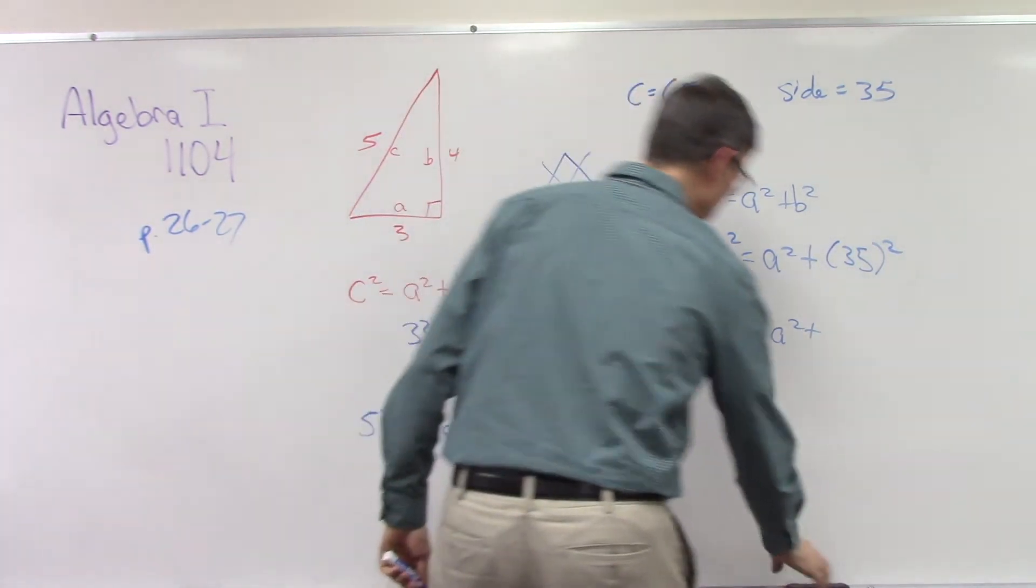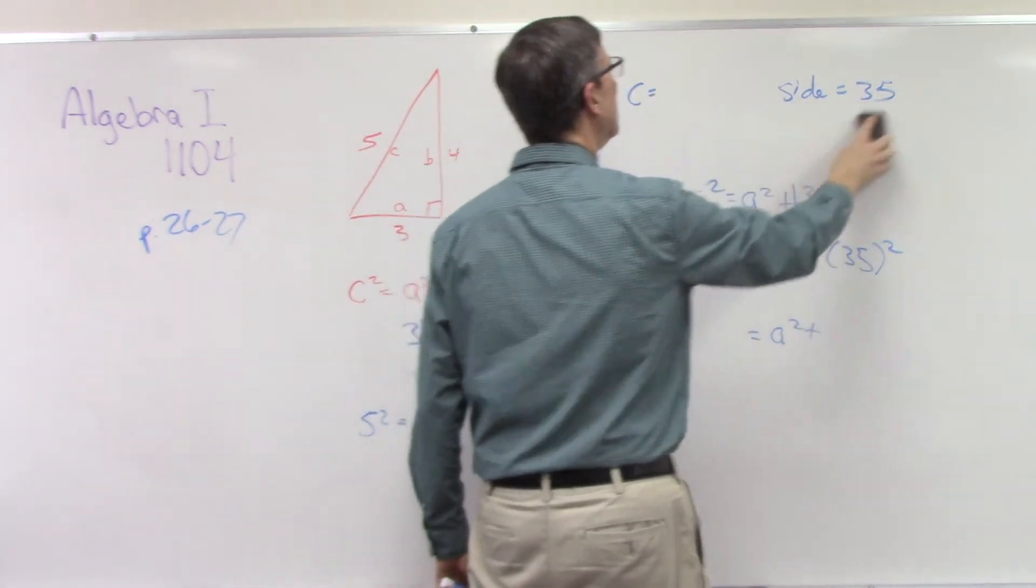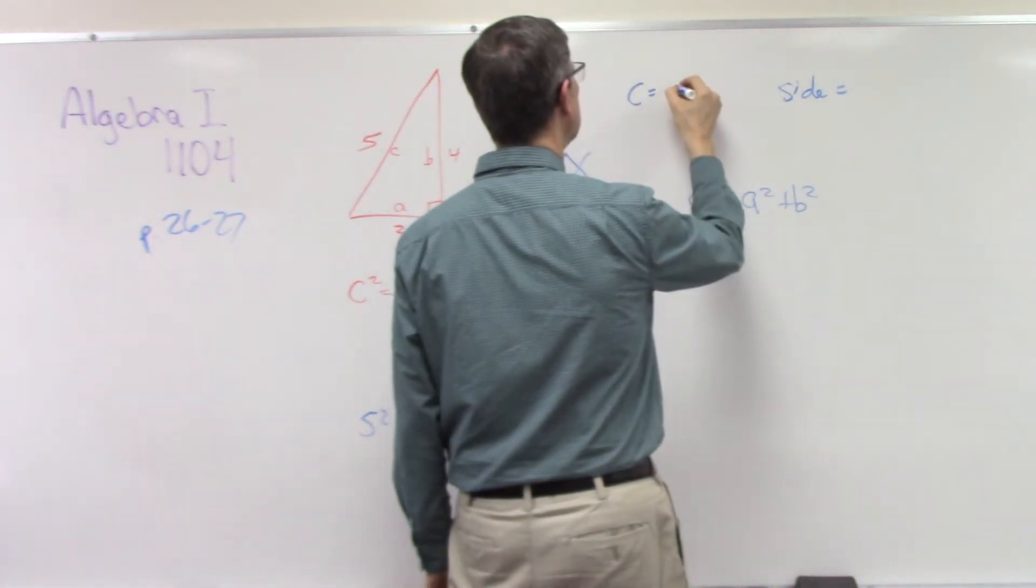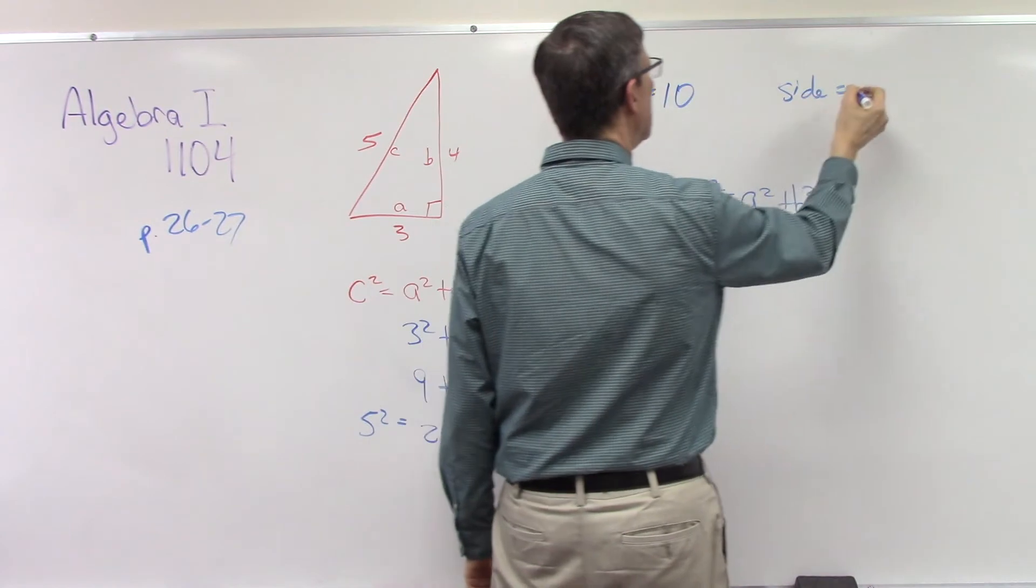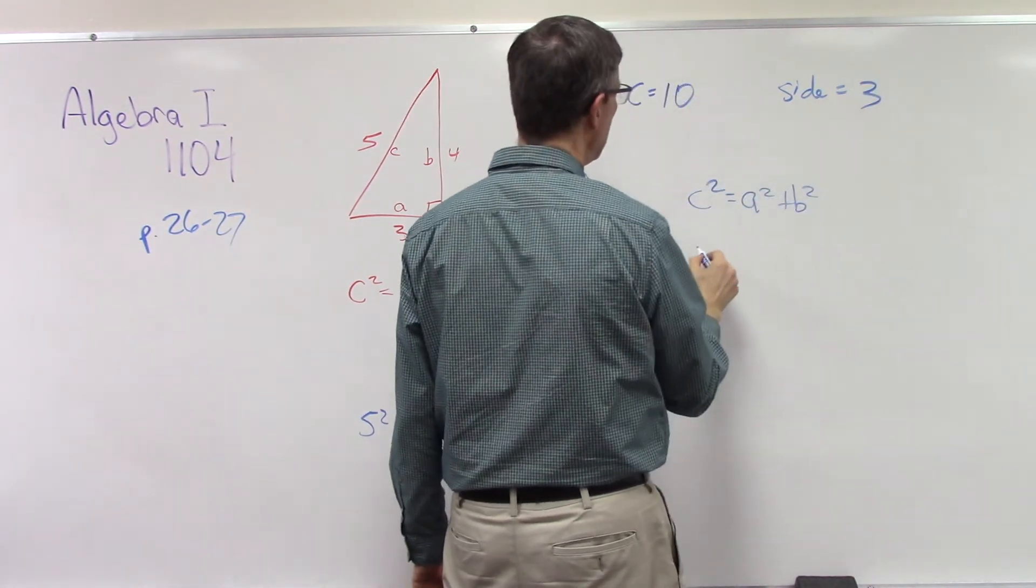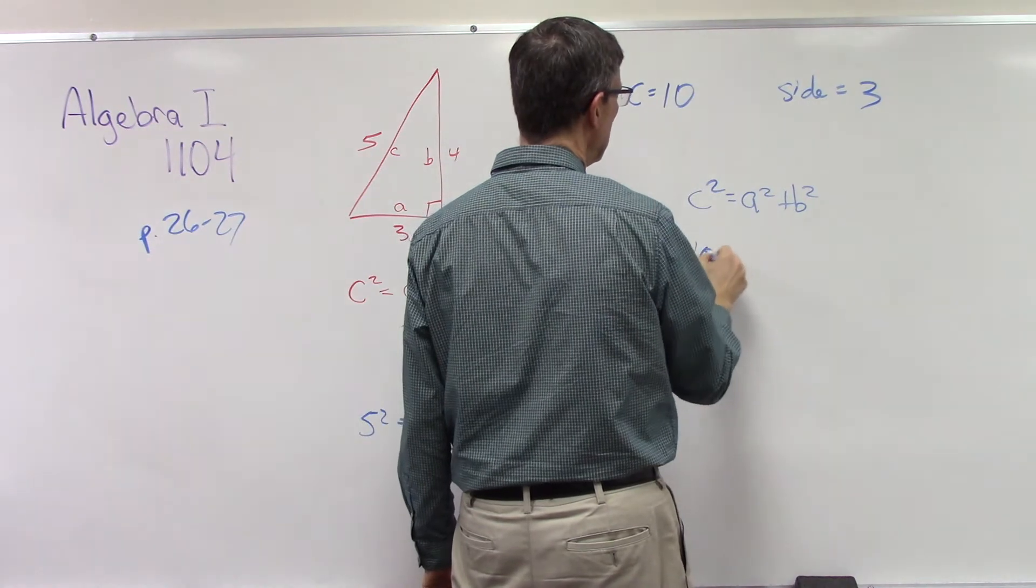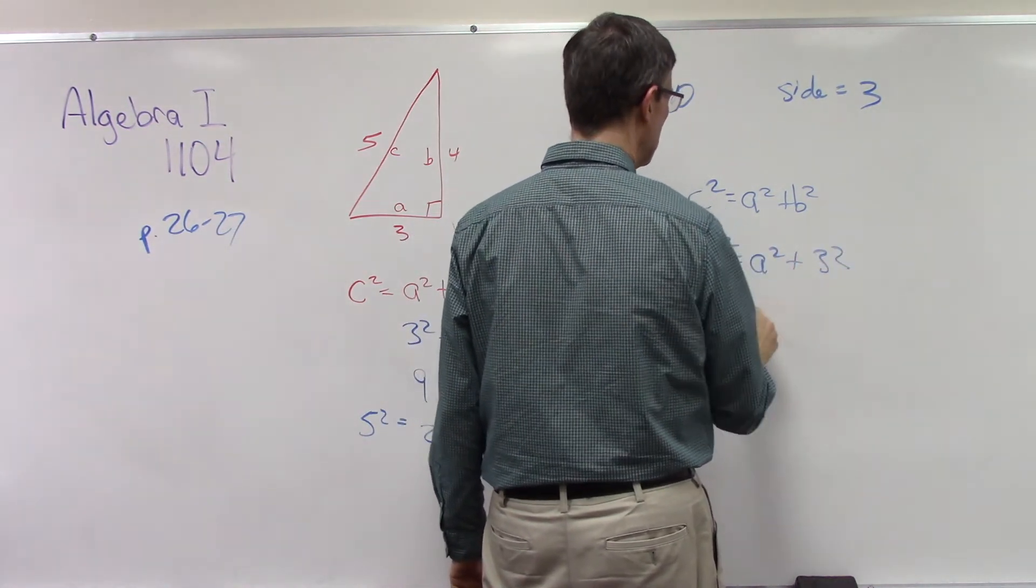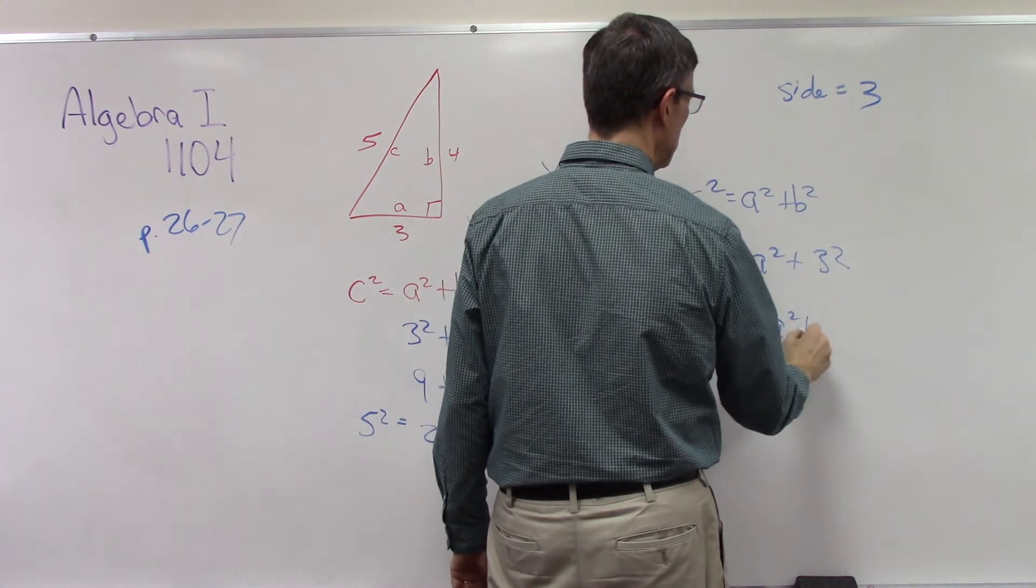Let me do a different one here rather than these big numbers. Let's say that C is 10 and side A is 3. So if C is 10, then 10 squared equals A squared plus 3 squared. A squared plus 9, and this would be 100.